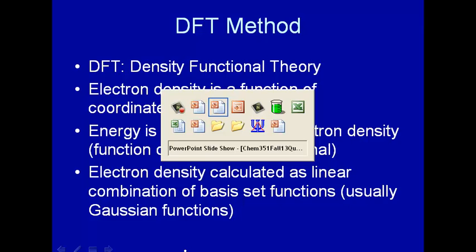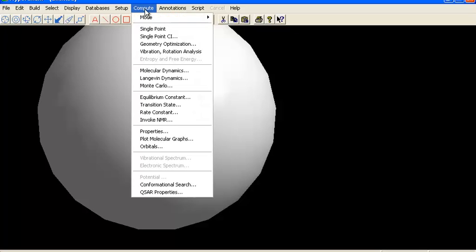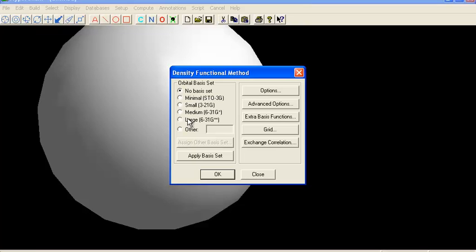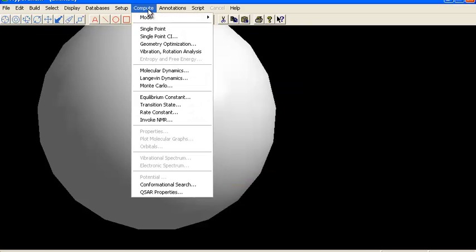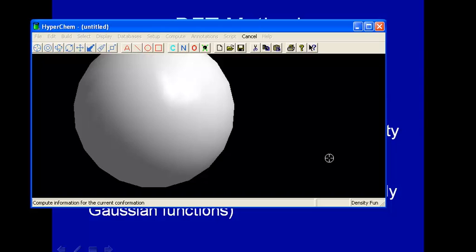So let's use HyperChem. Here's our helium atom that we had from the Hartree-Fock self-consistent field method. And now we're going to do a density functional theory calculation, a DFT calculation, using the same basis set, the same set of Gaussian functions to represent the wave functions. And we'll then now compute a single point.